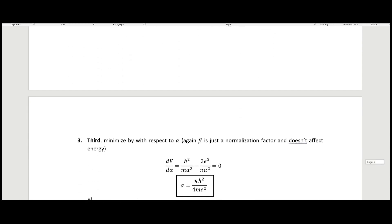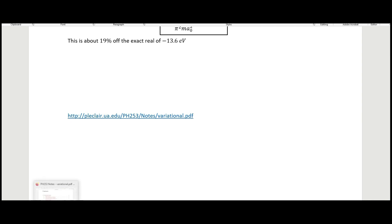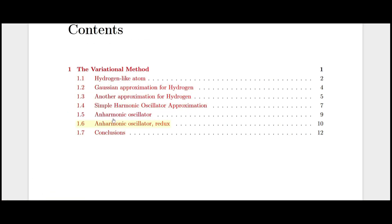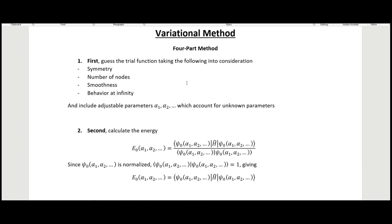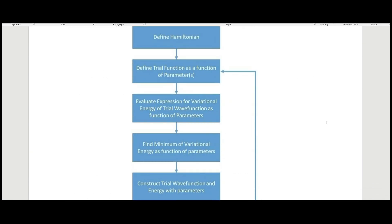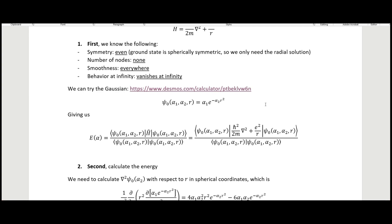These two examples using the Gaussian and the Lorentzian come from a source linked in the description. That source also covers several other trial functions including a hydrogen-like atom approximation, a simple harmonic oscillator, and two different anharmonic oscillators — so check it out if you want more examples. The take-home message is that we're applying this four-part method to different trial functions to get closer and closer to the actual ground state energy of hydrogen.